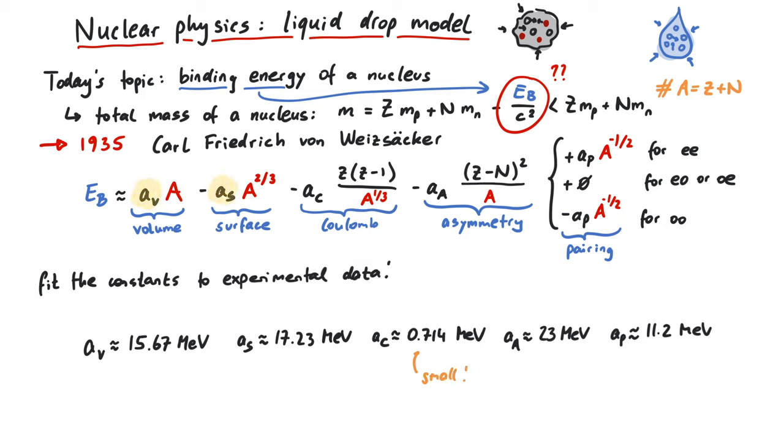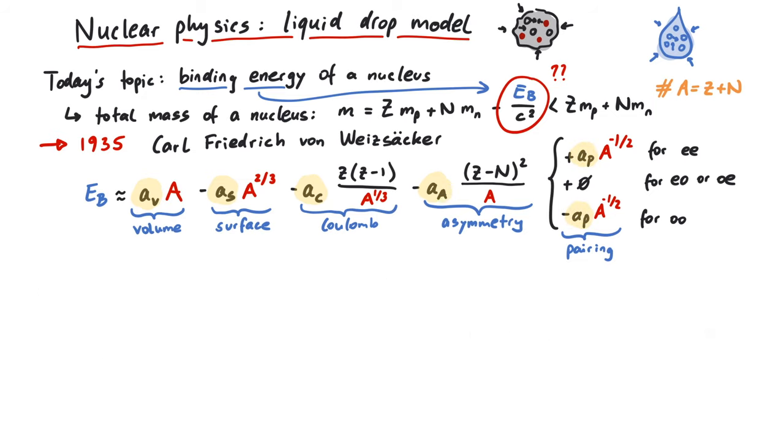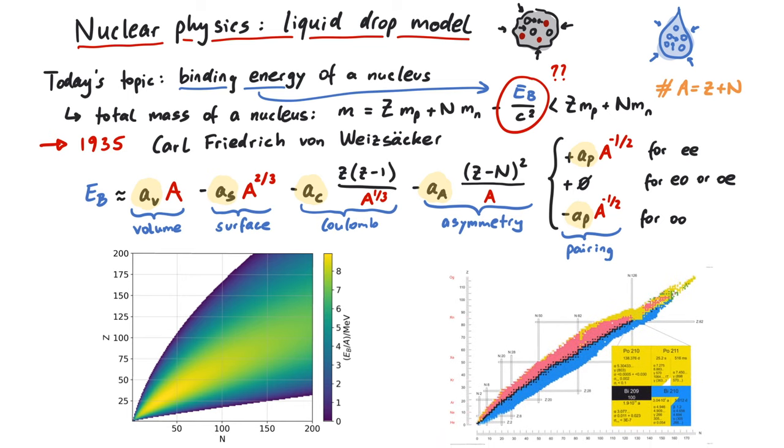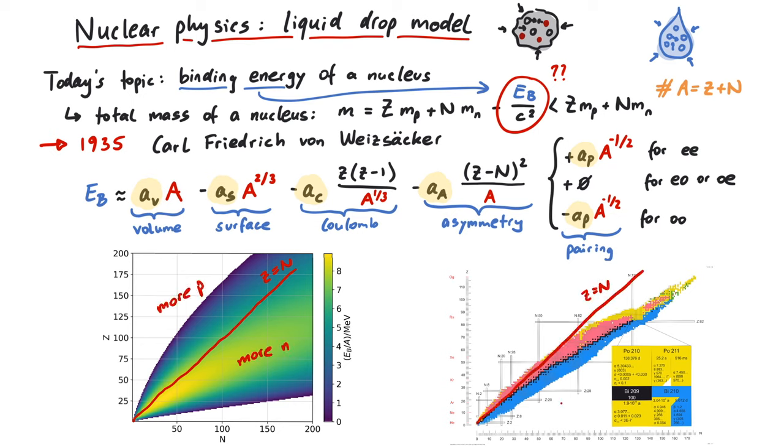Now that we have formula and numeric values, we can plot this equation for some values of Z and N. As you can see, this is the same shape as the table of nuclides. The curvature of both figures show that stable nuclei are usually those where we have more neutrons than protons.